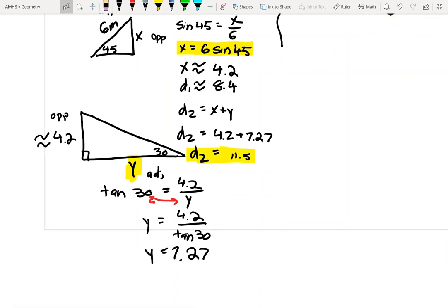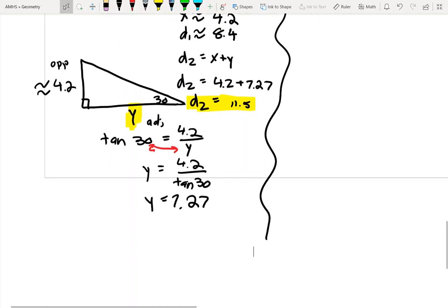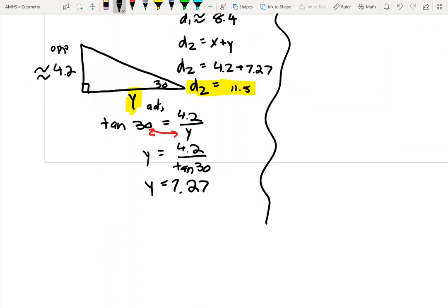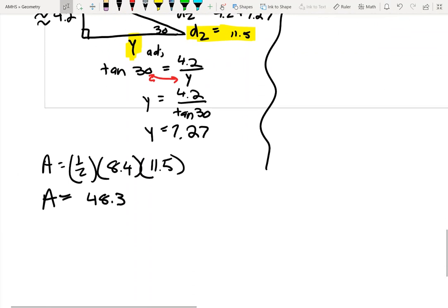Now I've got d2. Let's go back to our formula, one half d1 times d2. The challenging part on this problem is using the trigonometry to know the lengths of the diagonals. Area equals one half. d1 is our 8.4, and d2 is 11.5. The area for this kite is 48.3. Units are meters, so this is square meters or meters squared.